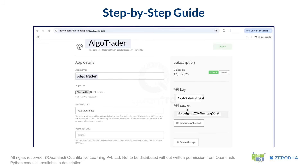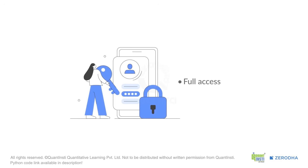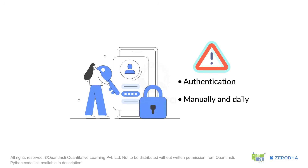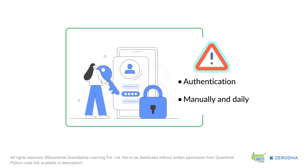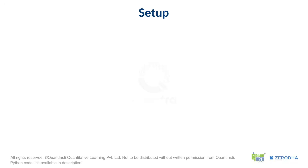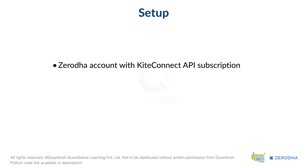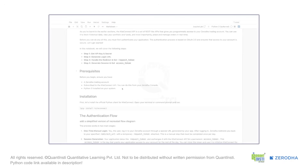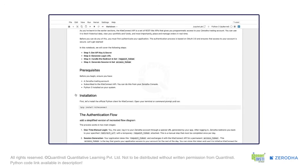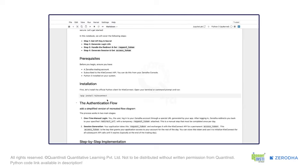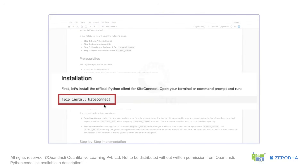So that's how easy it is to get your Zerodha developer account up and running and grab your API key and secret. This is a starting point for anything you want to build. To start automating trades, our program first needs to have full access to your Zerodha account — this is called authentication. We need to do this step manually and on each day, so that you have complete control on how your account is accessed. You need two things: your Zerodha account with the KiteConnect API subscription, and Python installed on your system. We will use the KiteConnect library, which simplifies the code we need to write. If you don't have it, run this command in your terminal or in the notebook to install it.